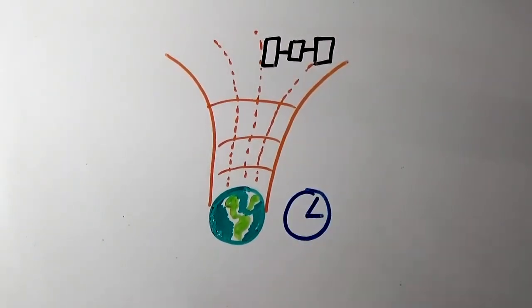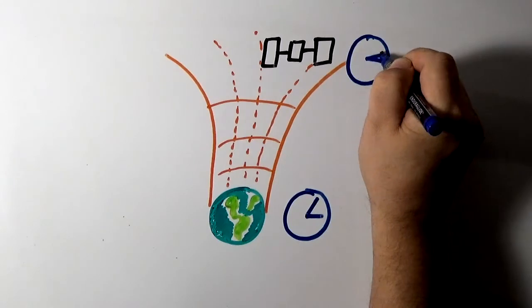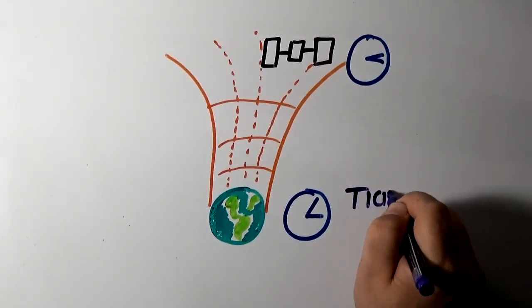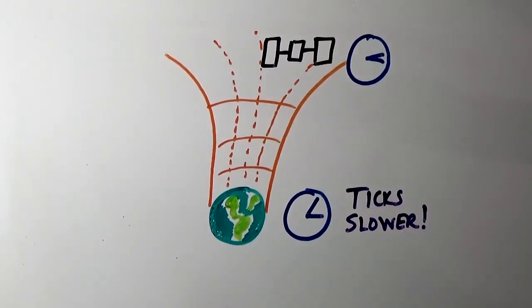The Earth warps time such that a clock on Earth ticks slower than a clock on the GPS satellite. How much slower? About one billionth of a second slower for every two seconds that passes.